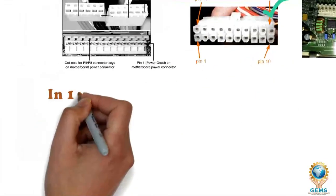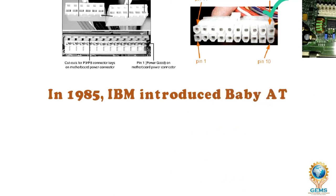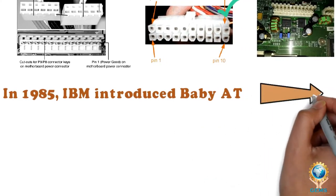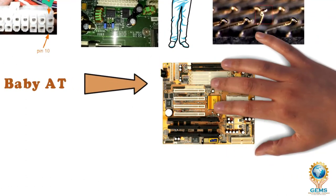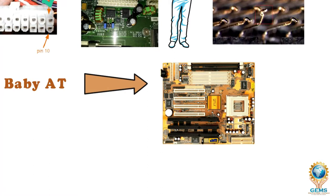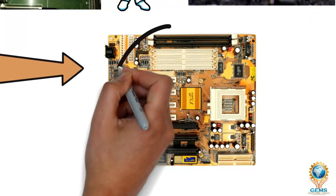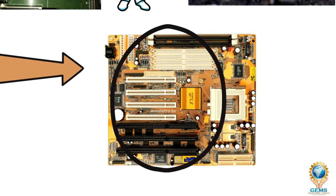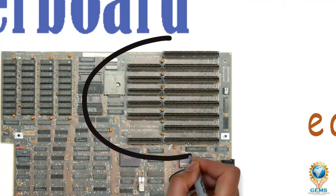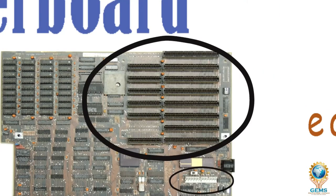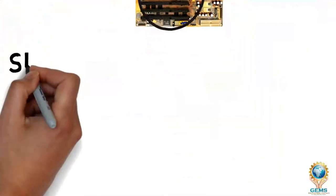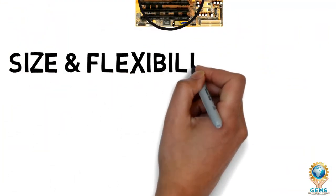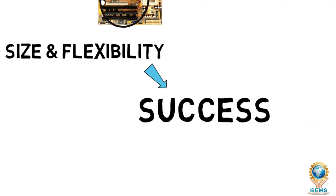In 1985, IBM introduced the Baby AT, and soon after, all computer makers abandoned AT for the cheaper and smaller Baby AT form factor. From those that used the 286 processor to the Pentium 1 and a limited number of Pentium 2 systems, this motherboard has similar mounting hole positions and the same 8 card slot locations as the AT form factor, but is 2 inches narrower and marginally shorter. The size and flexibility of this motherboard were key to the success of this format.